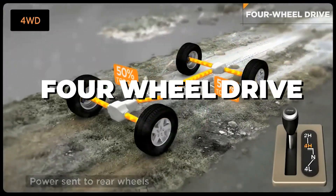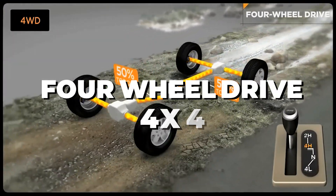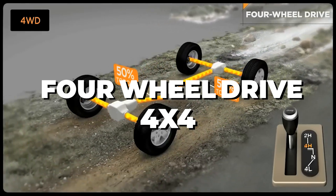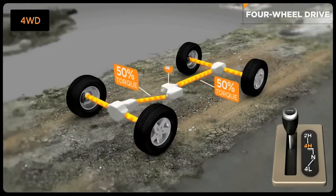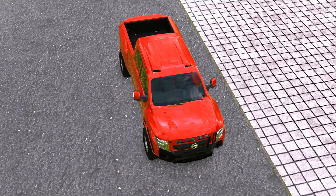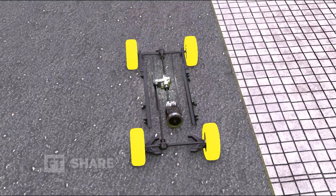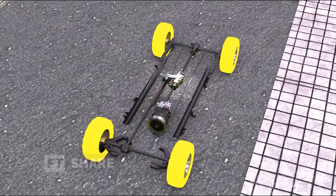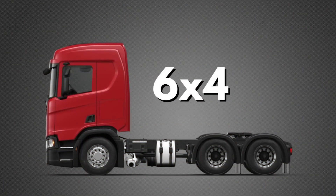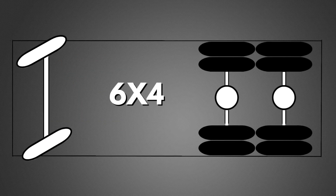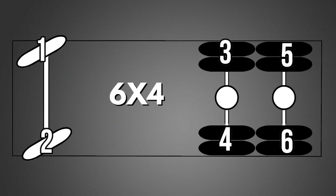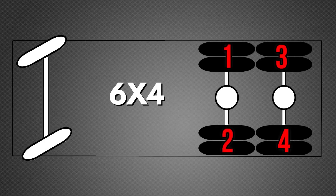Four-wheel drive, sometimes written as 4x4, is a familiar drivetrain system indicating that all four wheels of the vehicle can function as the driving force. This also applies to vehicles labeled as 6x4, meaning four of the total six wheels act as the driving wheels.